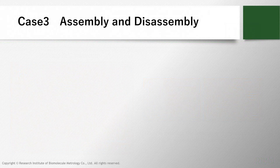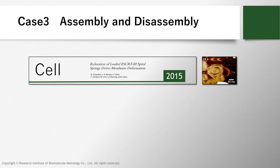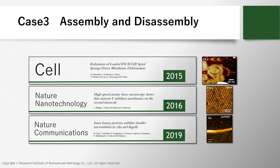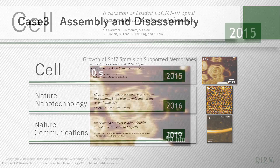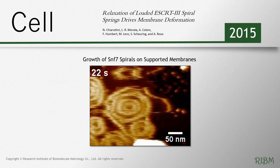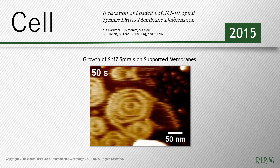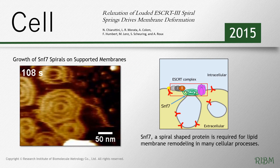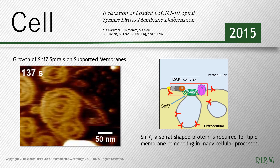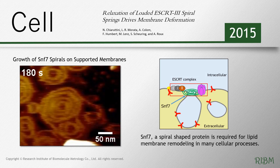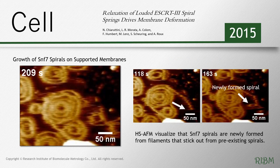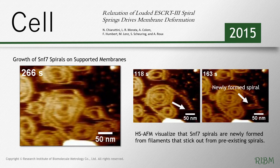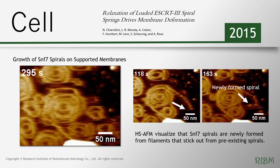Next, in the assembly and disassembly section, we will introduce another three videos. The video shows the growth of SNF-7 spirals on supported membranes. SNF-7, a spiral-shaped protein, is required for lipid membrane remodeling in many cellular processes. High-speed AFM visualizes that SNF-7 spirals are newly formed from filaments that stick out from pre-existing spirals.